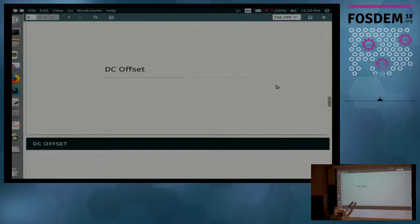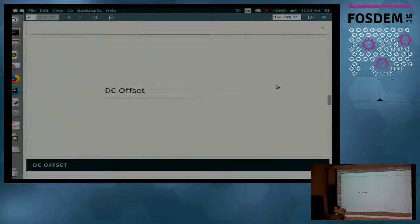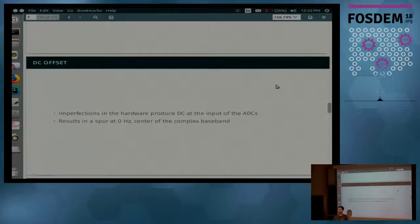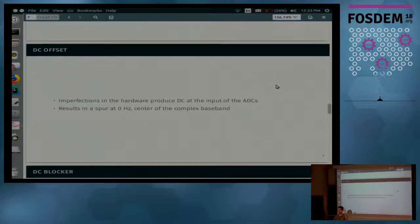DC offset. This is another very common occurrence. If you've ever thrown up like an RTL-SDR and looked at a spectrum, you see a spur right in the middle. That's almost certainly a DC offset. There's a small imperfection in the system that's adding DC right before the ADC. This ends up being a spur at the zero hertz bin, unsurprisingly, because it's DC, but it's annoying. And it's a spurious signal that's not actually there in the air because you can't broadcast DC very effectively.